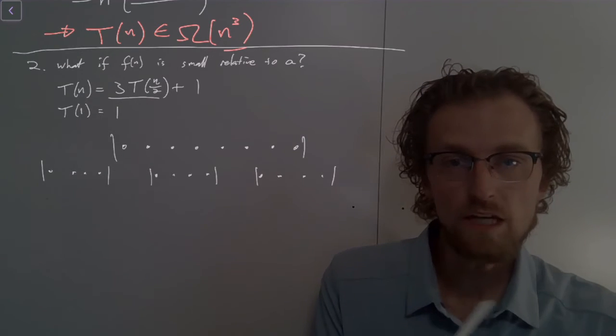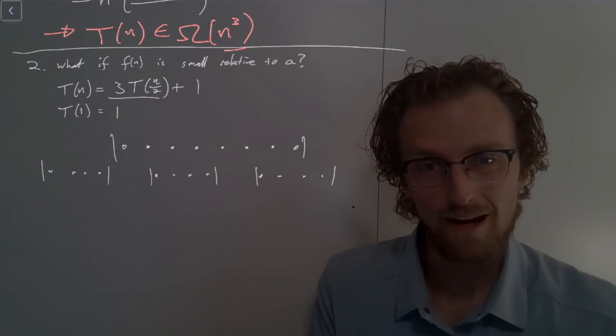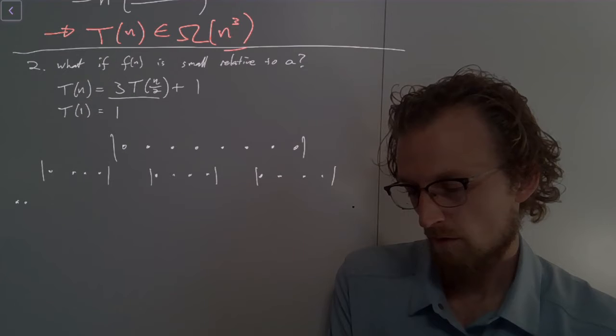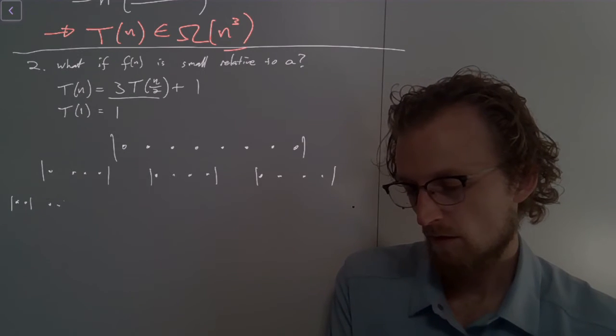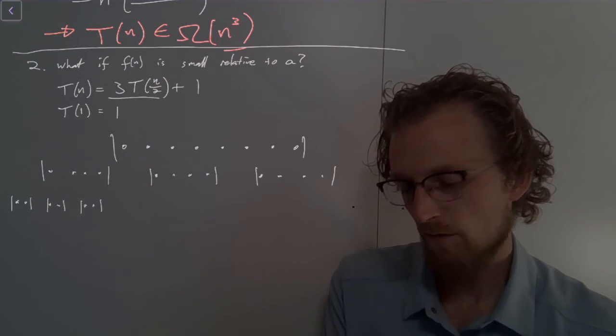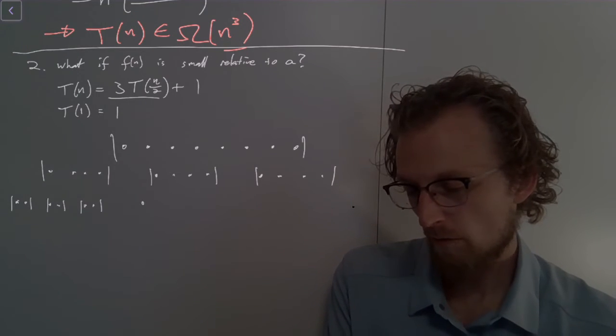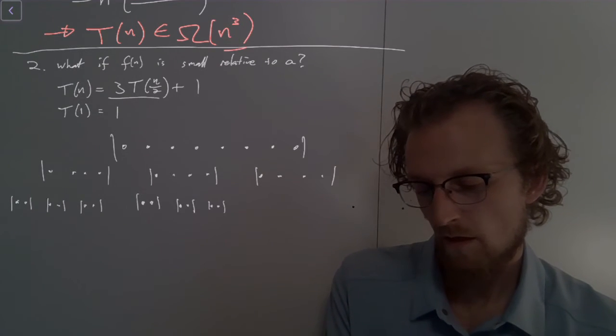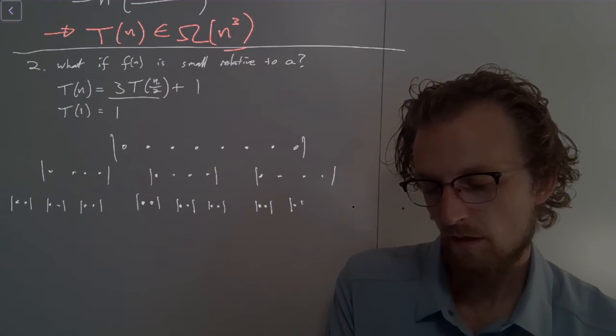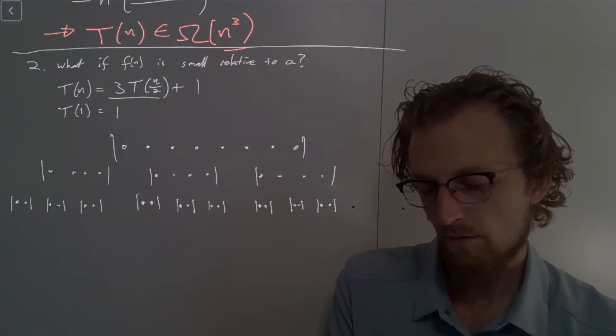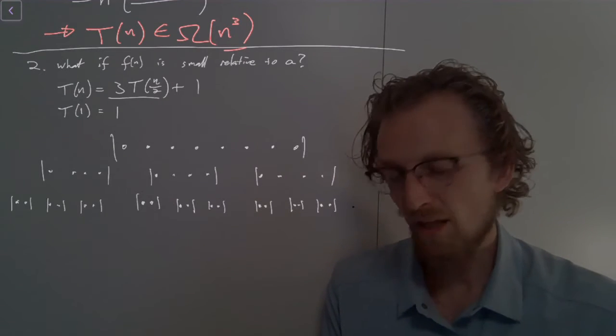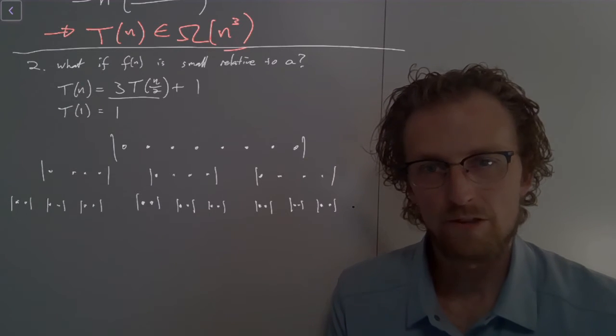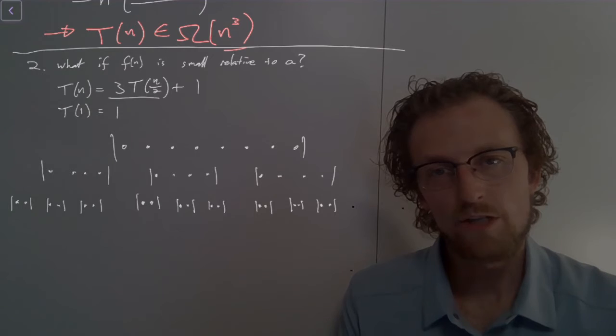At our next level down, now we have, for each of these, we're going to get three arrays. So here we'll have three size two arrays. So there's a size two, size two, size two from that leftmost. And then we have a size two, a size two, a size two. And here we have a size two, a size two, and a size two. So from the top, at the top level, we have one array. In the middle level, we have three. In the next level down, we have nine. And now in the next level down, we're going to have how many?